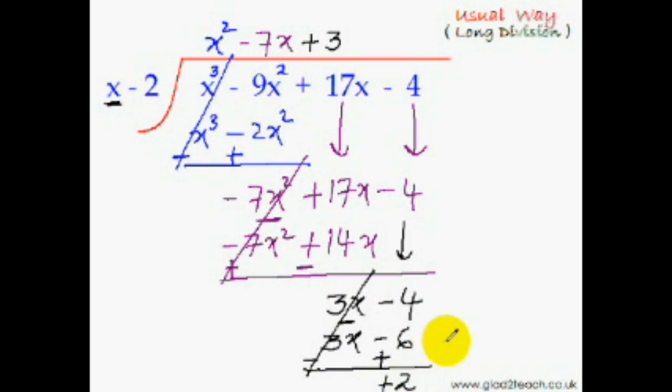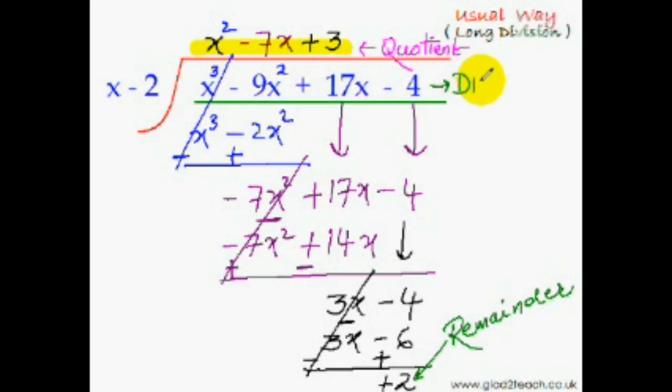Whatever is left here will be the remainder. This answer that we have got at the top is called the quotient in technical terms. The polynomial that was being divided is known as the dividend, and the polynomial that was dividing is known as the divisor.